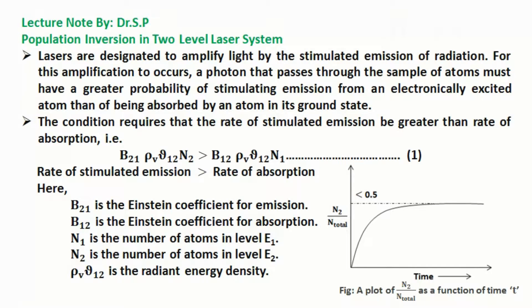And here, B21 is the Einstein coefficient for emission. B12 is the Einstein coefficient for absorption. N1 is the number of atoms in level E1. N2 is the number of atoms in level E2. Rho nu12 is the radiant energy density.